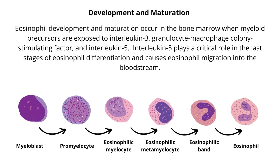Eosinophil development and maturation occur in the bone marrow when myeloid precursors are exposed to interleukin-3, granulocyte macrophage colony stimulating factor, and interleukin-5. Interleukin-5 plays a critical role in the last stages of eosinophil differentiation and causes eosinophil migration into the bloodstream.